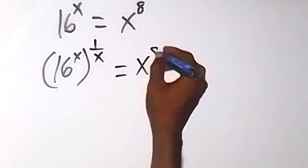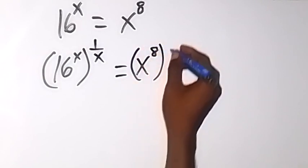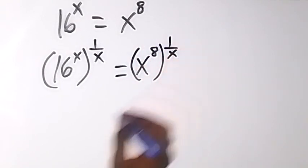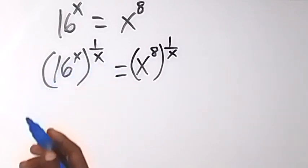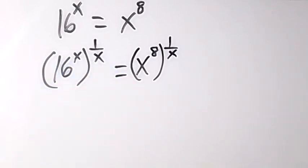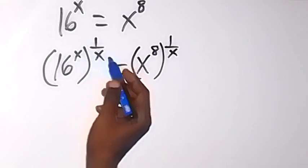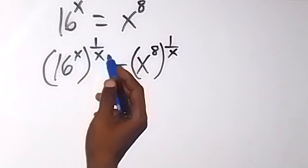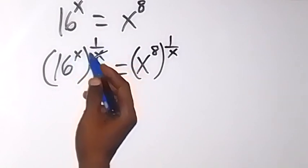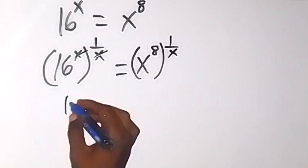we can multiply by 1 over x as well to balance it. And from the laws of indices, you know that this power, when they multiply each other — x times 1 over x — we cancel out here. So this will remain 16.